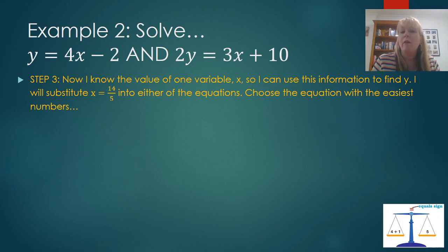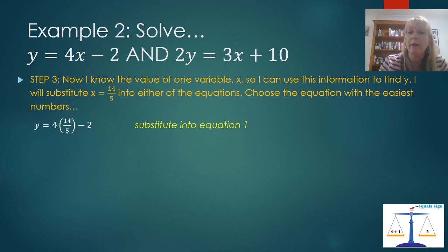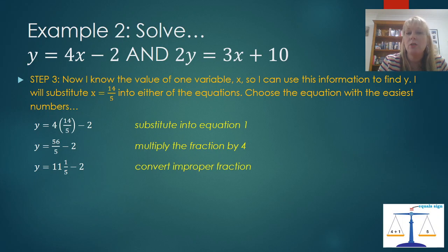So now I know the value of my x variable. I can substitute that into either of the equations and find the value of y, and it's probably the easiest to substitute that back into equation 1, because y is the subject, so very little transposing to do here. So I'm going to multiply. Every time I see the letter x, I'm going to put in a 14 fifths. So 4 times 14 fifths take away 2. If I evaluate that in the calculator, 4 lots of 14 is 56, and 56 is going to be over 5. Don't put that in the calculator and change it to a decimal, and that's going to be 2 subtracted there.